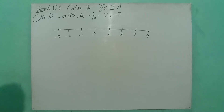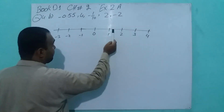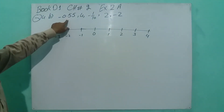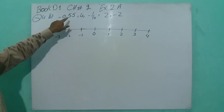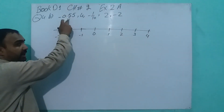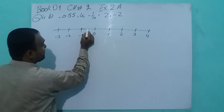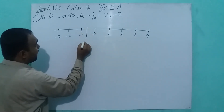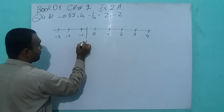Now part B. Draw a number line with 0, 1, 2, 3, 4 and minus 1, minus 2, minus 3, all at equal intervals. First value is minus 0.55. It means the center between 0 and 1. Half of 1 is 0.5, and 0.55 is a little more than that. So this point, negative, between 0 and 1, is minus 0.55.